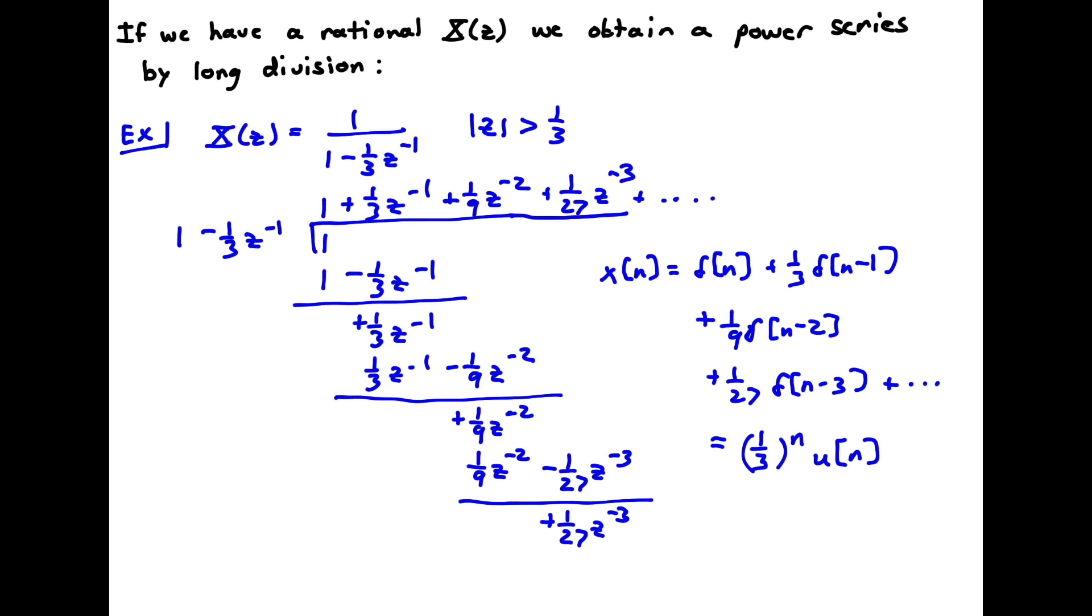Now, that's what we would have expected from our table. So this might not be the easiest way to do this one. For this one, we would have expected to just take the inverse transform from our table since it's one of the standard pairs in there. But this is another way to see it. And we're also going to see that long division plays a role in actually obtaining proper fractions in partial fraction expansion. So this was a good way to get some practice with long division.